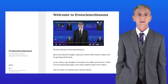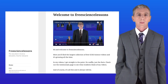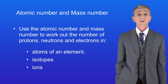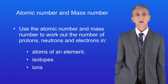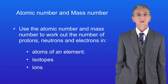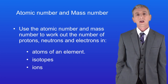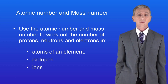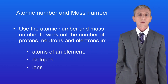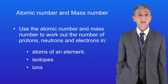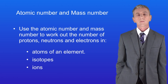Hi and welcome back to freesizelessons.co.uk. By the end of this video you should be able to use the atomic number and mass number to work out the number of protons, neutrons and electrons in atoms of an element, isotopes and ions. This might look a bit tricky but stick with it because it's easier than it looks.